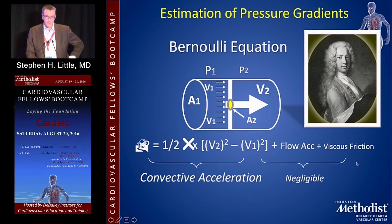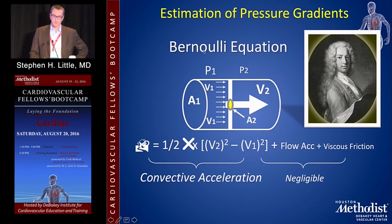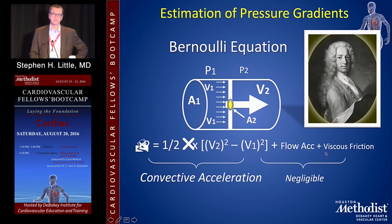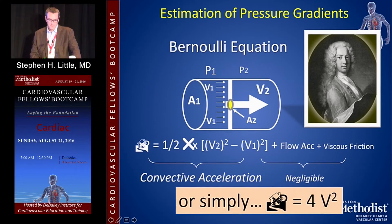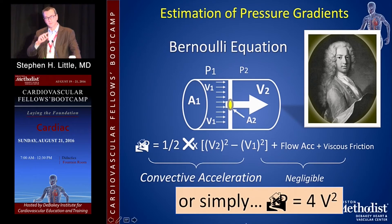The other important application is pressure estimation, based on the Bernoulli equation. The full formula is very complicated, but we negate elements like flow acceleration, viscous friction, and convective acceleration — concepts from aerodynamics that aren't relevant physiologically. Our simplified formula is: delta P equals 4 times velocity squared. So if the aortic valve velocity is 4 meters per second, 4 × 4² = 64, meaning the peak pressure gradient between the LVOT and proximal aorta is 64 mmHg. That's how we get it — 4V².